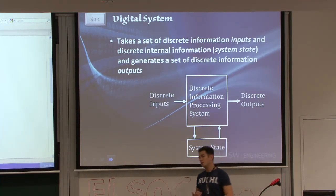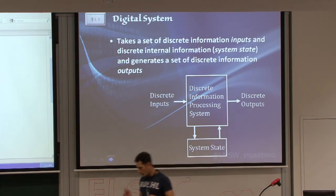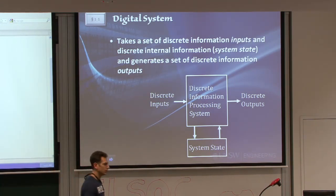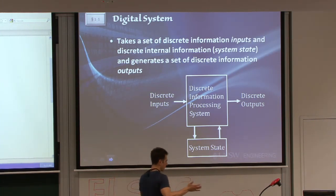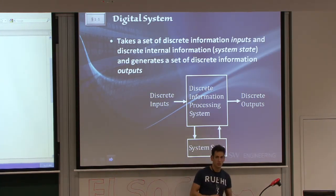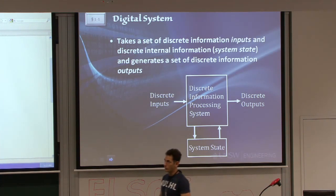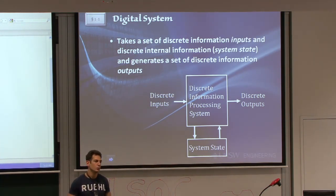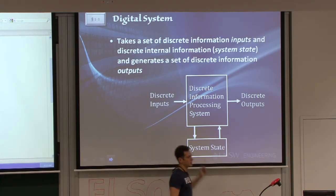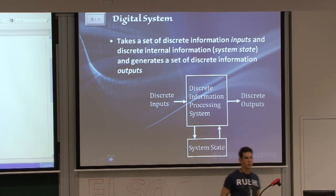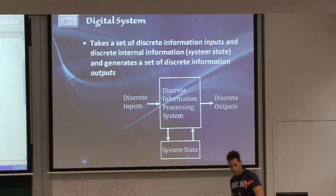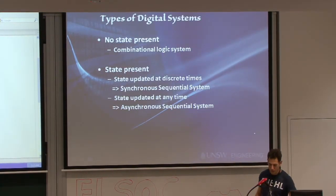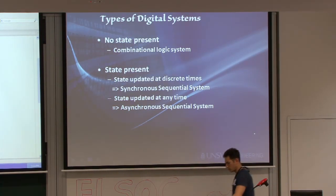It will be discrete in two dimensions. The quantities themselves can only take one of a finite number of values — let's say the numbers from 1 to 10. And it will be discrete in time. So we will look at our inputs, outputs, and system states at given times, not overall as continuous time. A bit abstract now — it will make sense very soon.